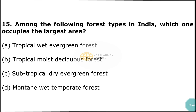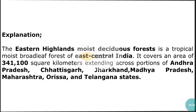Question number 15: Among the following forest types in India, which one occupies the largest area? The correct answer is option B — Tropical Moist Deciduous Forest. The Eastern Highland Moist Deciduous Forest is a tropical moist broadleaf forest of east-central India. It covers an area of 341,100 square kilometers extending across portions of Andhra Pradesh, Chhattisgarh, Jharkhand, Madhya Pradesh, Maharashtra, Orissa, and Telangana states.